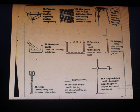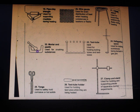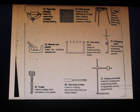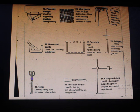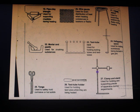The tripod stand is used for supporting beakers and flasks during heating. The mortar and pestle are used for crushing substances. The test tube rack is used for holding boiling tubes and test tubes. The deflagrating spoon is used for holding substances being burned in gas jars. The pair of tongs is used to safely hold corrosive or hot solids. The test tube holder is used for holding test tubes when they are being heated. The clamp stand is used for holding and supporting pieces of apparatus during experiments.